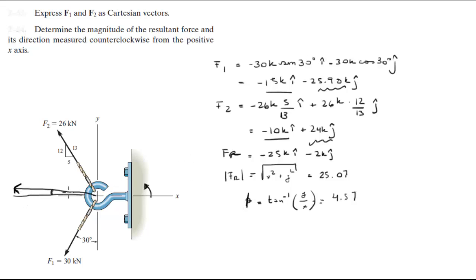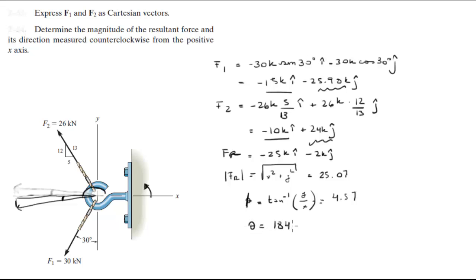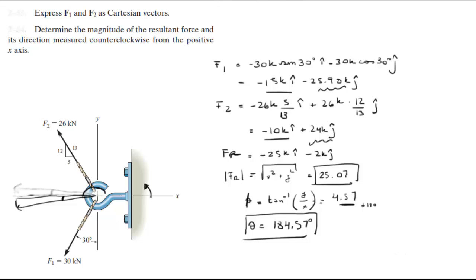I drew this wrong — let me erase this. The resultant force is actually aiming down in that direction. So to find the full angle beta, we add 180 degrees to our previous result, giving beta equal to 184.57 degrees. That is the final answer for the angle, and 25.07k is the final answer for the magnitude of the resultant force.